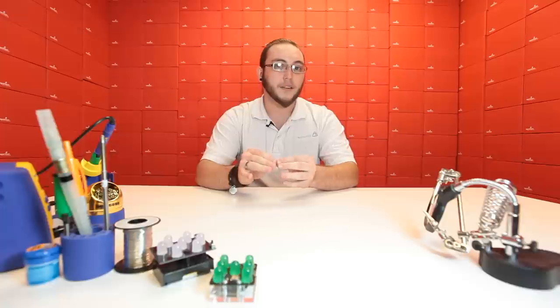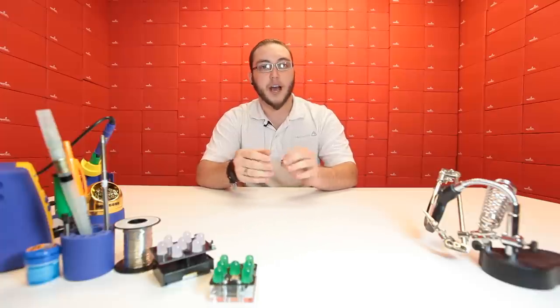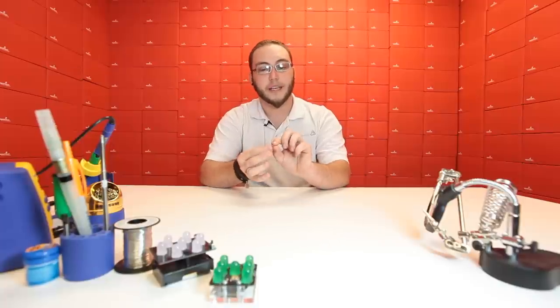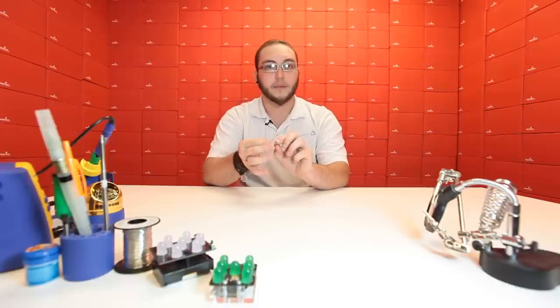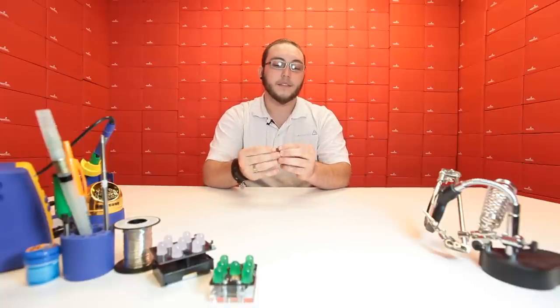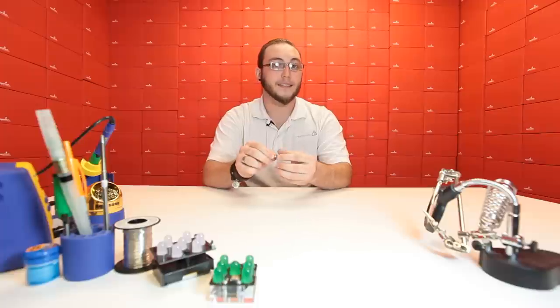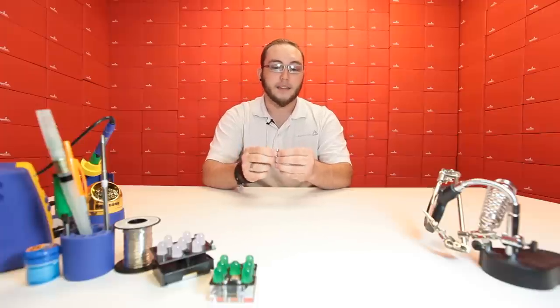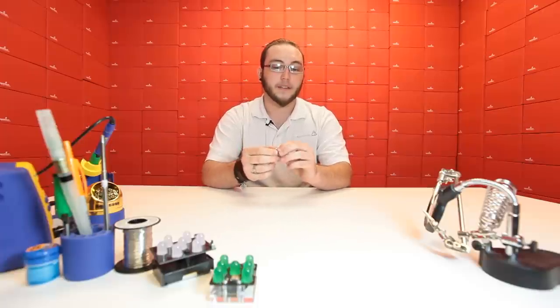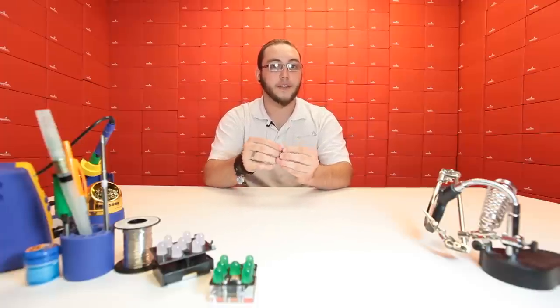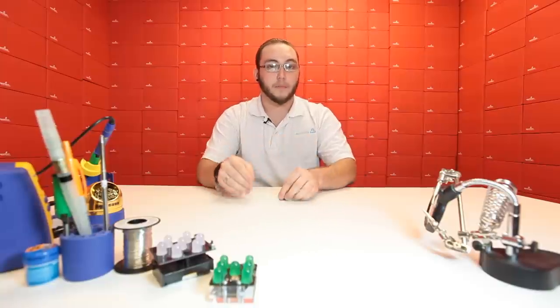The difference between a tilt sensor and, say, a gyro is that a gyro will actually give you the angle at which something's being tilted. The tilt sensor will basically tell you yes, it's tilted, or no, it's not. And this particular sensor will tell you whether it's tilted in any of four directions: left, right, forward, or backward.